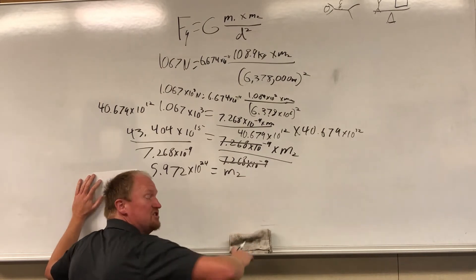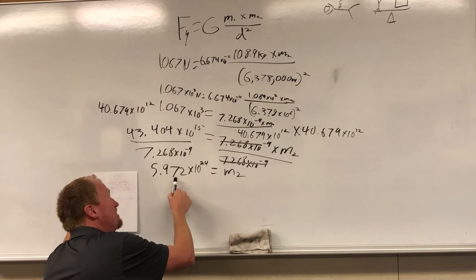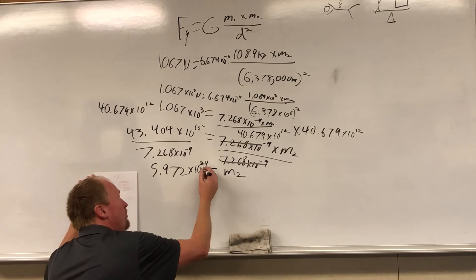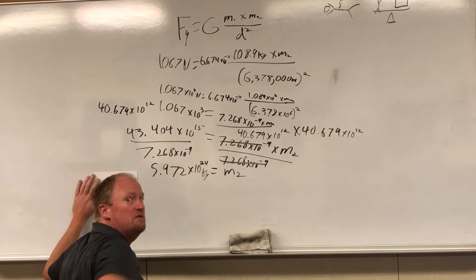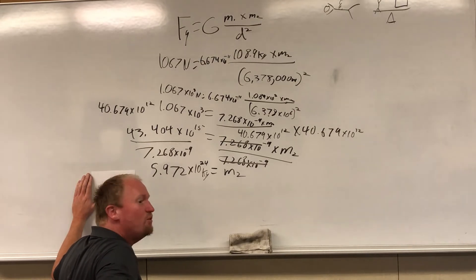So the second mass, which is Earth, comes out 5.972 times 10 to the 24 kilograms, which is big compared to me. But if you ever wondered how we know how massive the Earth is, this is the first way we ever figured out how to do it.